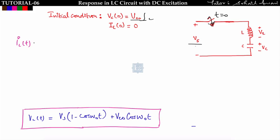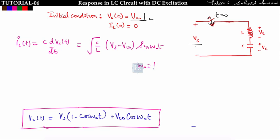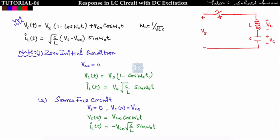Now I can find IL(t). Since IL(t) equals C·d(VC)/dt, differentiating and multiplying by C gives: IL(t) equals √(C/L)·(Vs minus VCₒ)·sin(ω₀t), where ω₀ equals 1/√(LC). So the final formulas are: VC(t) equals Vs(1 minus cos(ω₀t)) plus VCₒ·cos(ω₀t), and IL(t) equals √(C/L)·(Vs minus VCₒ)·sin(ω₀t).